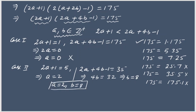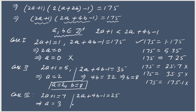Case 3: 2a + 1 = 7 and 2a + 4b − 1 = 25. From the first equation, a = (7−1)/2 = 3. Substituting a = 3: 6 + 4b − 1 = 25, so 4b = 20, giving b = 5. So we have the solution a = 3 and b = 5.